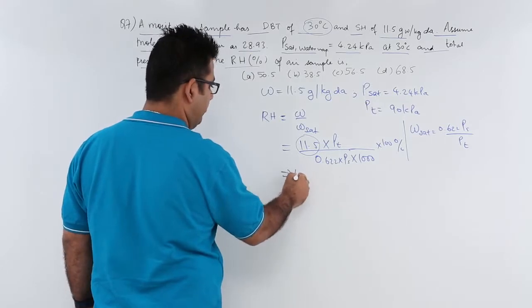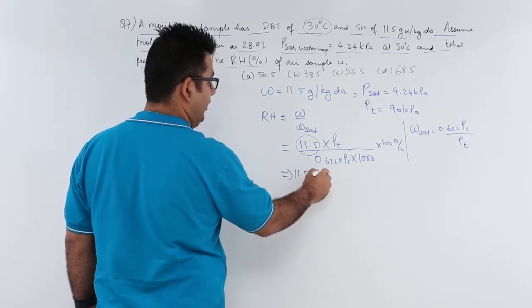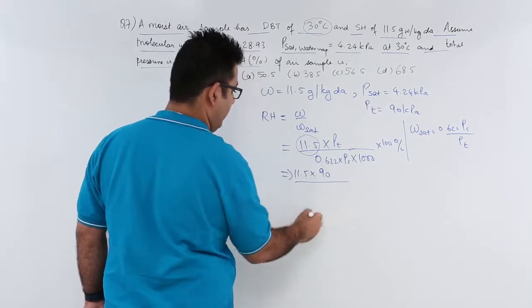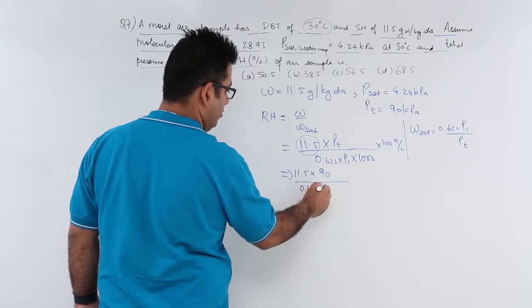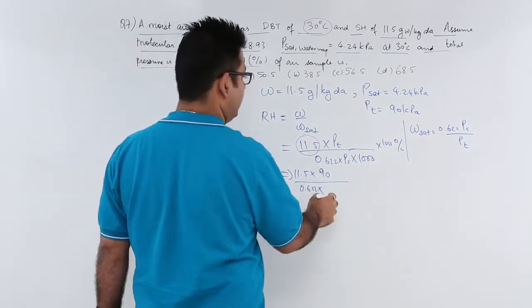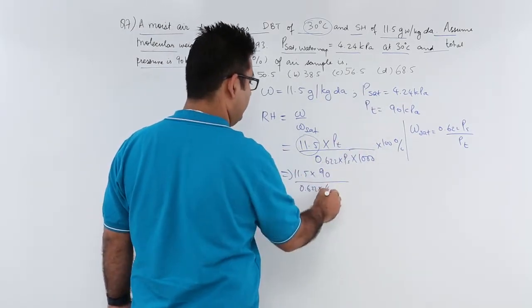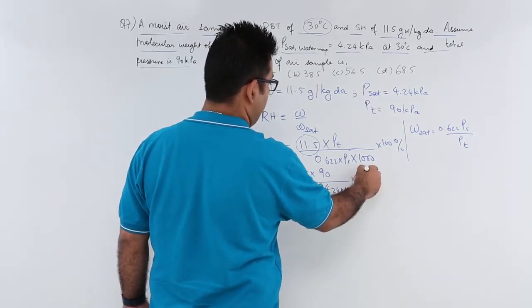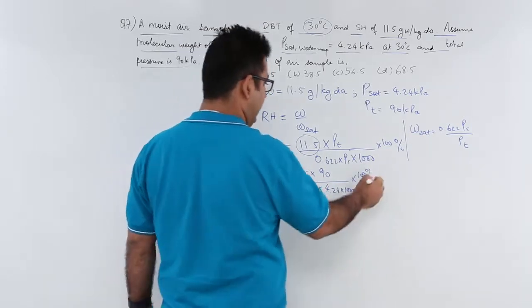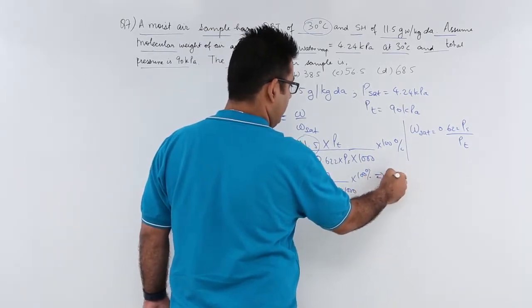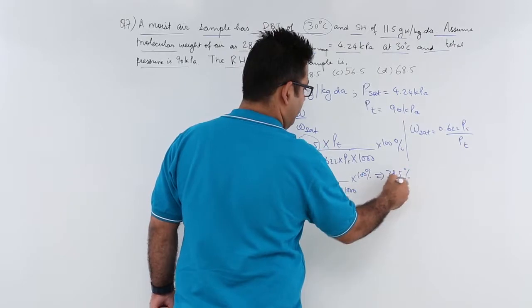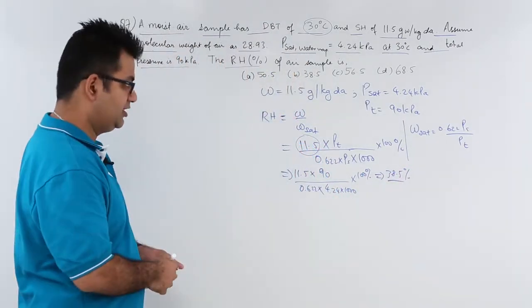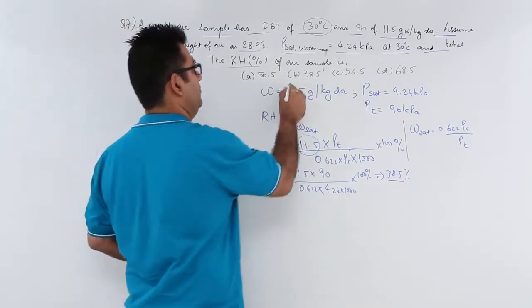So that would be 11.5 into pt is 90 upon 0.622 into ps is how much? 4.24 into 1000 into 100%. That would leave you with a value of 38.5%. So this corresponds to option number B.